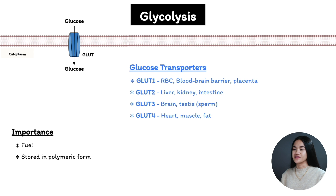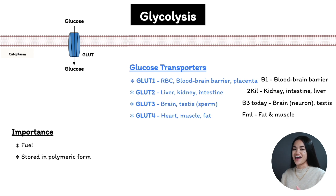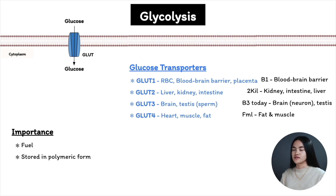A mnemonic to remember these transporters: B1, to kill B3 today, FML. That's why B3 doesn't exist. B1: the B stands for blood and the blood-brain barrier, and 1 for GLUT 1. To kill: K for kidney, I for intestine, L for liver, and 2 for GLUT 2. B3 today: B for brain specifically neurons, today for testes. And FML: fat and muscle — both skeletal and heart muscle — for GLUT 4.